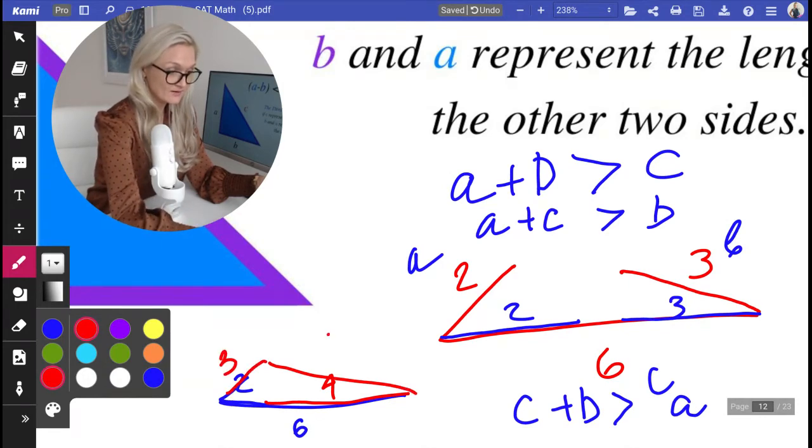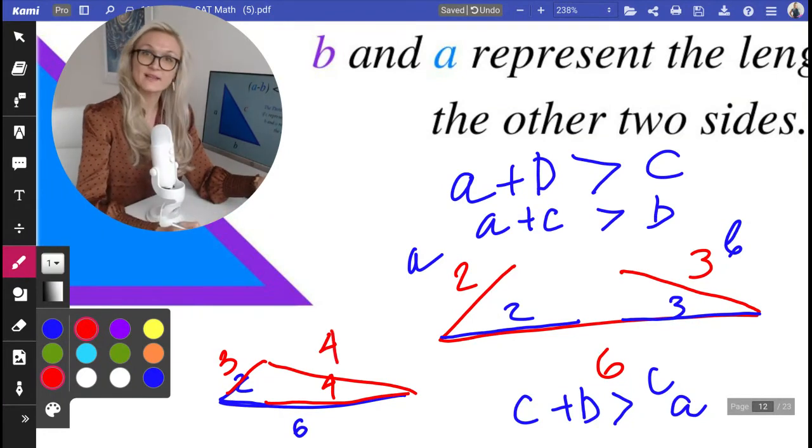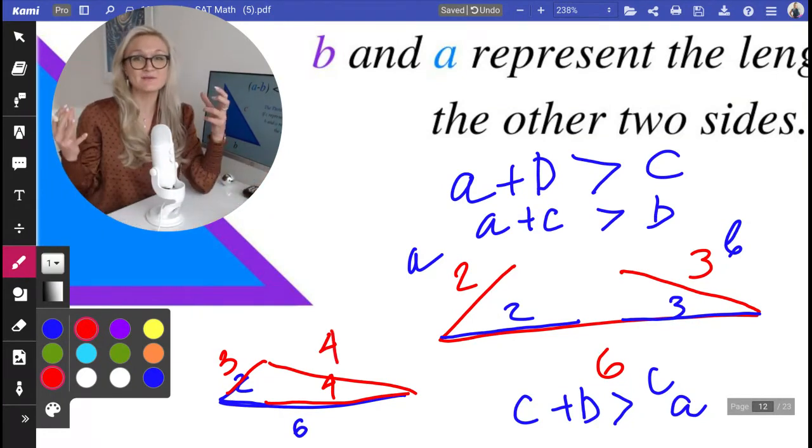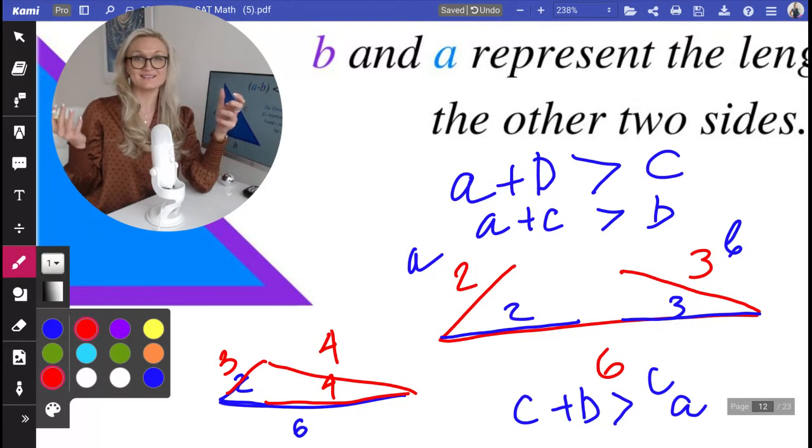So if it's three, four, and six, then it works because the sum of any two sides has to be greater than the third.